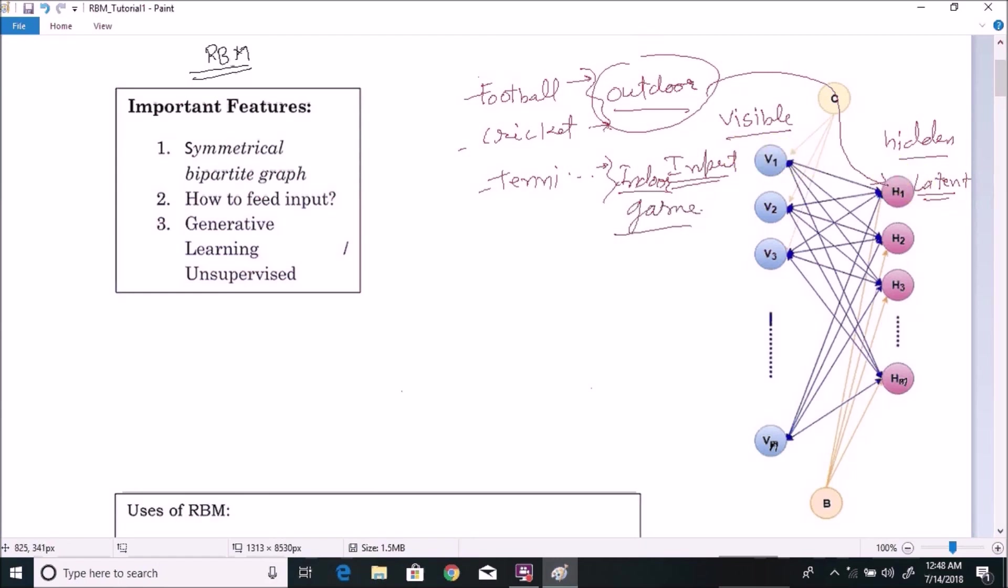So outdoor and indoor game category is the extra information about football, cricket and tennis. We call this information as latent information or latent variable. This type of information generally we use in classification in several different tasks of Restricted Boltzmann Machine.